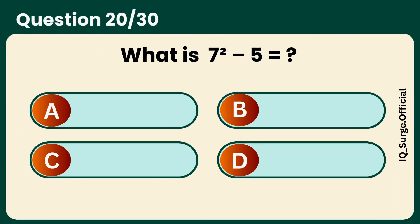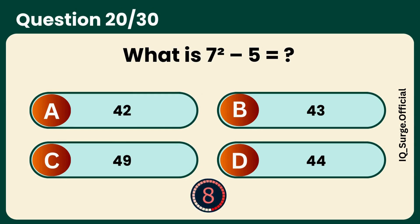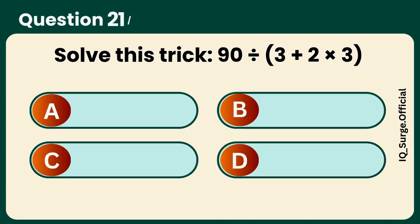What is the square of 7 minus 5? Answer D, 44.